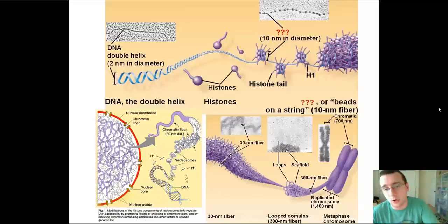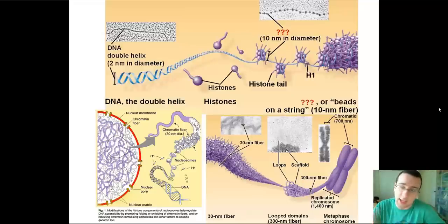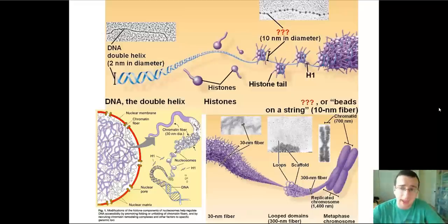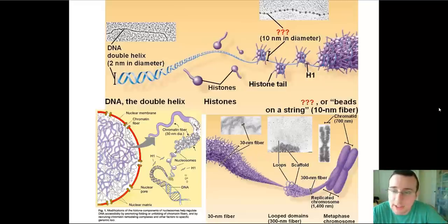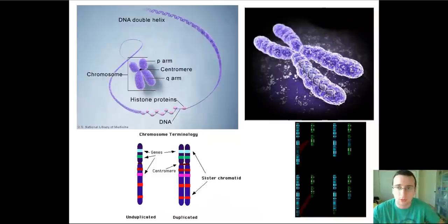Nucleosomes coil on top of each other to form coils, which form supercoils when they coil up, forming the actual chromatin or chromosome fibers. In that way, the DNA gets packaged more and more to make it easier for chromosomes to actually transport during the cell division process.